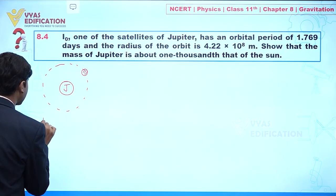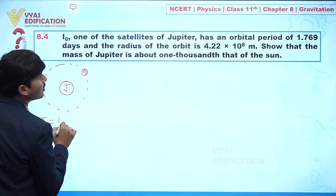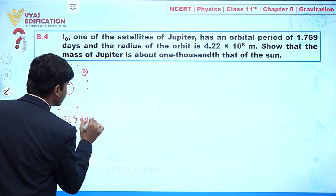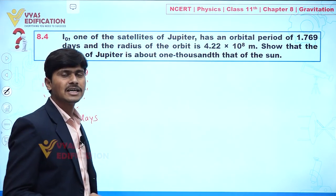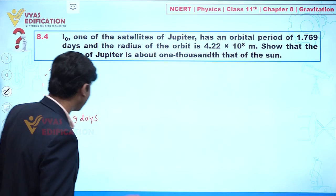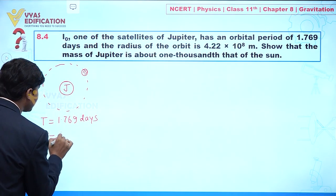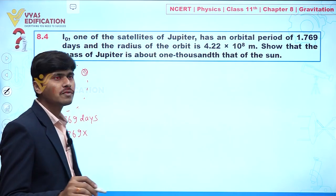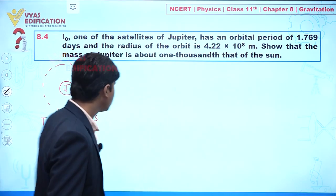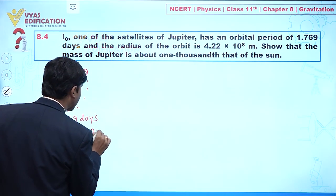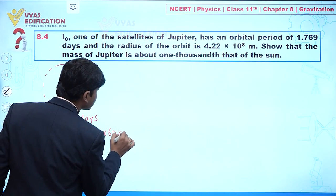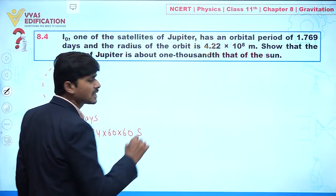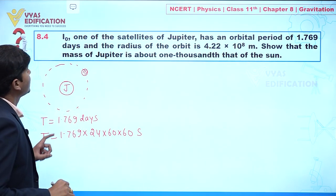The orbital period — that is, the time period — is given as 1.769 days. We can convert this into seconds: one day has 24 hours and 3600 seconds. So the time period in seconds is 1.769 × 24 × 3600 seconds.